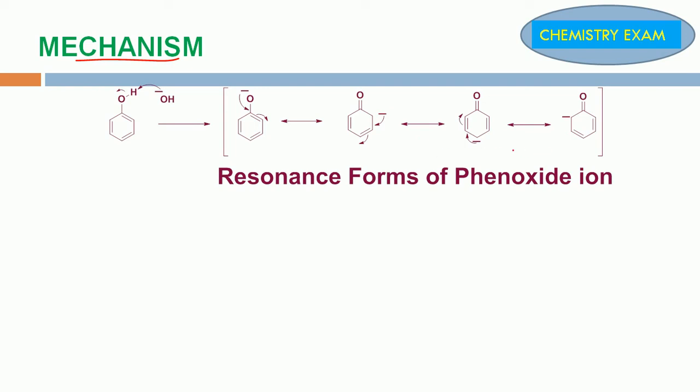These are the resonance forms. First, the anion stays on the oxygen atom. Then the anion goes to the ortho position. Another resonance form has the anion stable in the para position. Finally, it returns to the ortho position. These are the possible resonance forms of phenoxide ion.